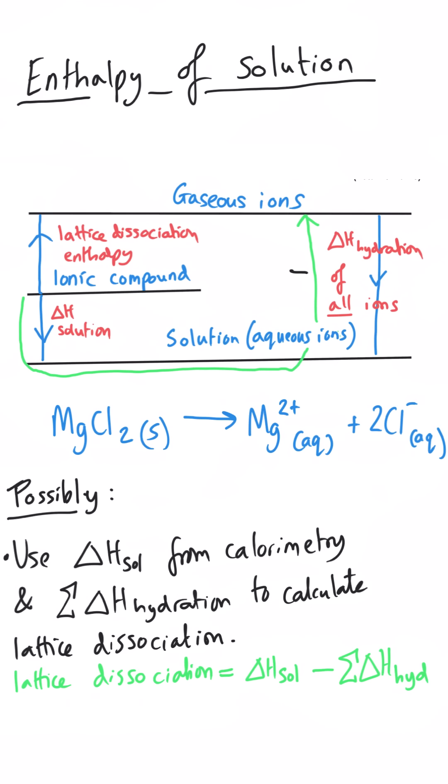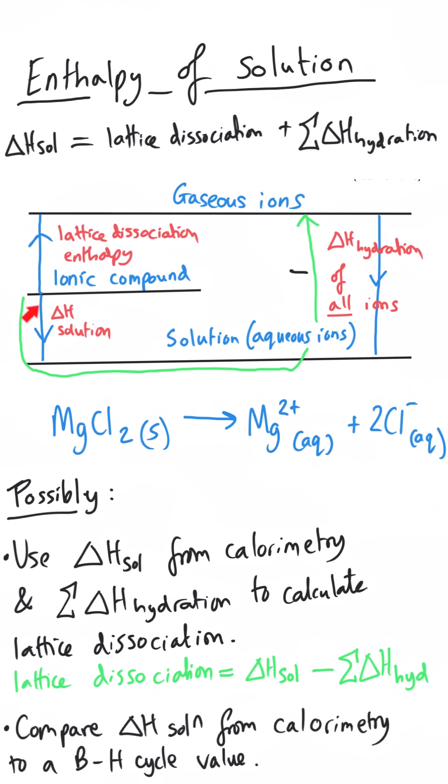The other thing that they could get you to do is to use some data that they provide you entirely, so lattice dissociation enthalpy and a series of hydration enthalpies, to calculate a theoretical enthalpy of solution without actually doing the experiment. And that would allow for questions such as, explain why your value is different to the one that calculated using this Born-Haber cycle, and potentially you might include things like heat loss to the surroundings, or maybe it didn't dissolve properly when you were doing the actual enthalpy of solution experiment itself. But both of those, good tie-ins with the required practical.